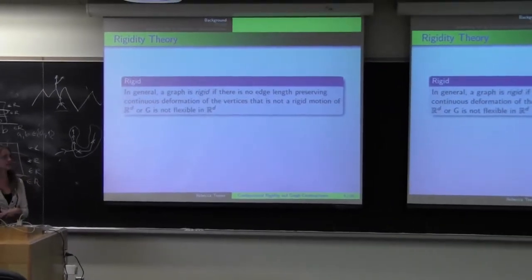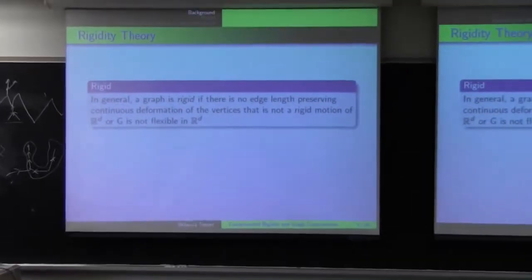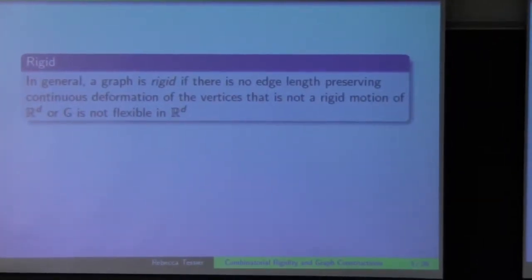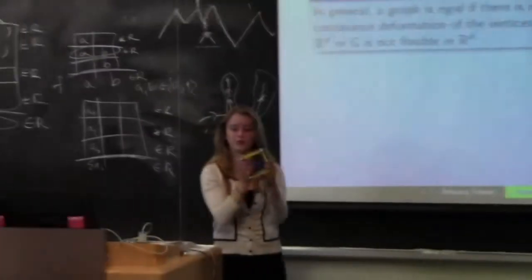So in general, a graph is rigid if there is no edge length preserving continuous deformation of the vertices that is not a rigid motion. So I have a little model here. I don't know if everyone will see. So if you take this structure and you try and deform it some other way, without actually physically breaking the structure, there's no way that you can deform this structure.